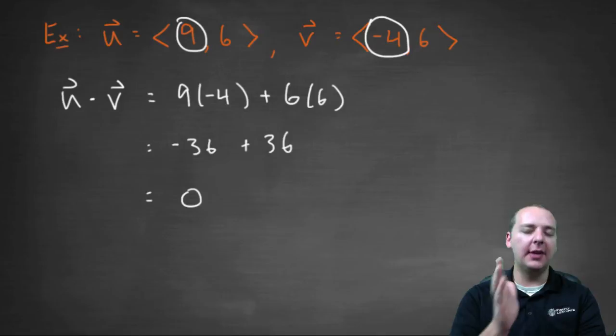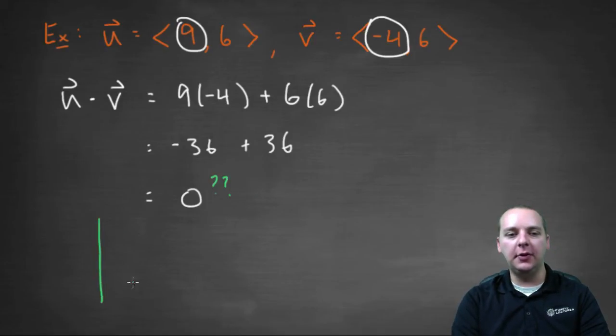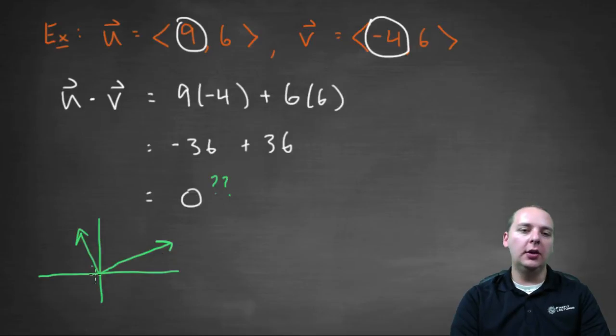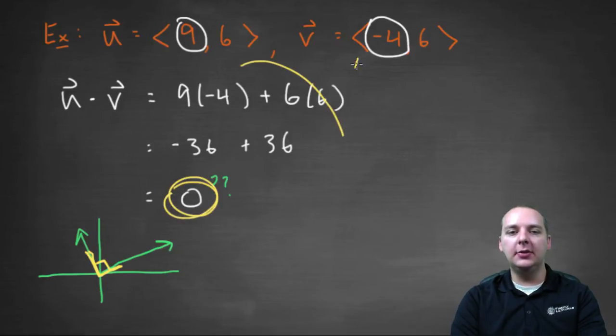What you're probably starting to ask yourself is, okay Devin, that's fine, I understand the definition, but what on earth does this number tell you exactly? Well, let me graph these two vectors very quickly, and I'm just going to do a rough sketch. Nine comma six is this guy's terminal point, and negative four comma six is this guy's terminal point. Look at these two vectors here, do you notice anything peculiar about these two? What jumps out to me, is it looks like these guys meet at a ninety degree angle.